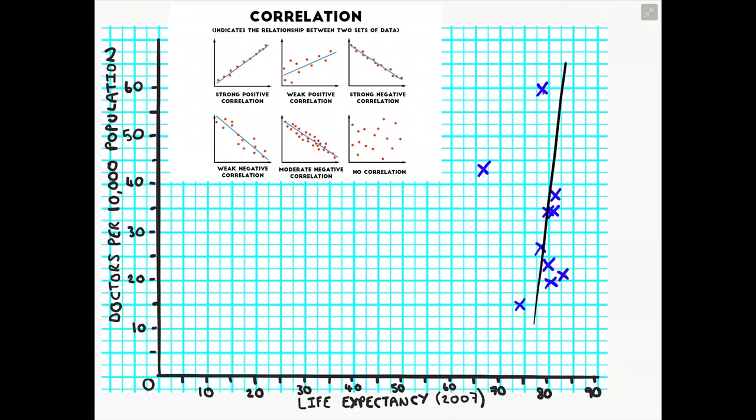So because I've marked 10 countries on my scatter graph, I am trying to get five points on one side of my line of best fit and five points on the other. I might have to go through a point to get an even distribution on either side of my line. But really you should try to have an even number of points either side.